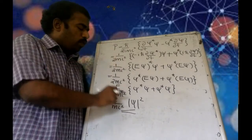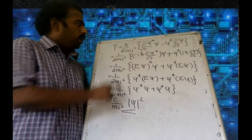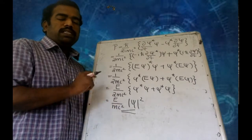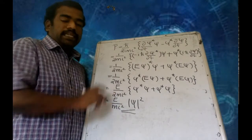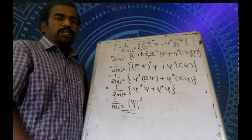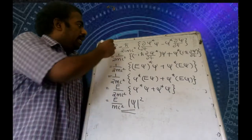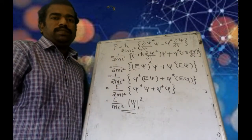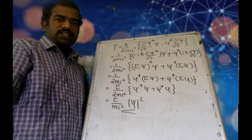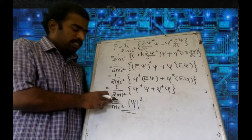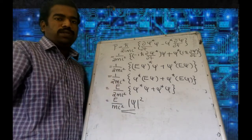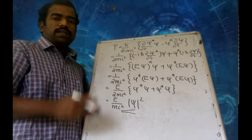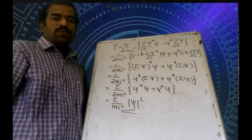This is very important. Can we interpret this P as probability density? The term |psi|² is there, as in the Schrödinger equation. But the problem is there is an E term. This E term means P can take positive as well as negative values, which is problematic for a probability density.